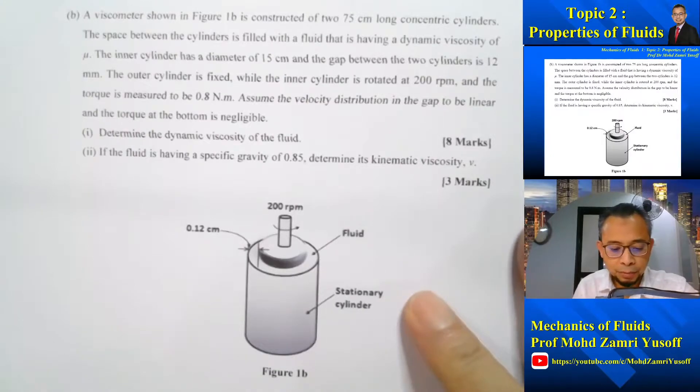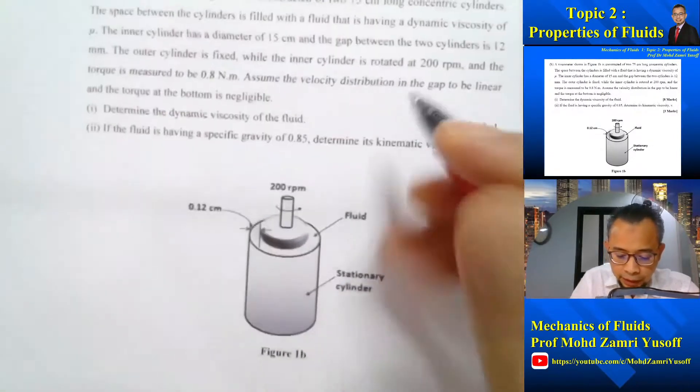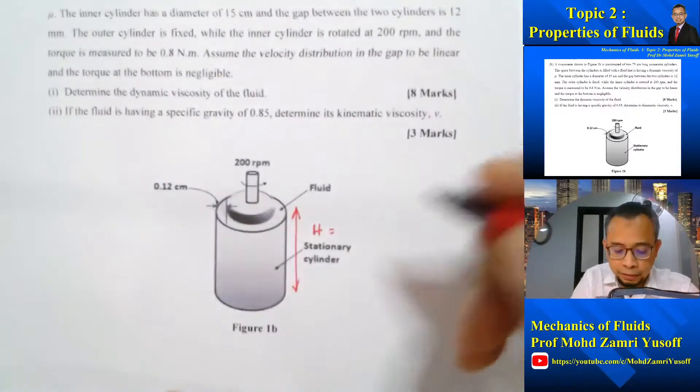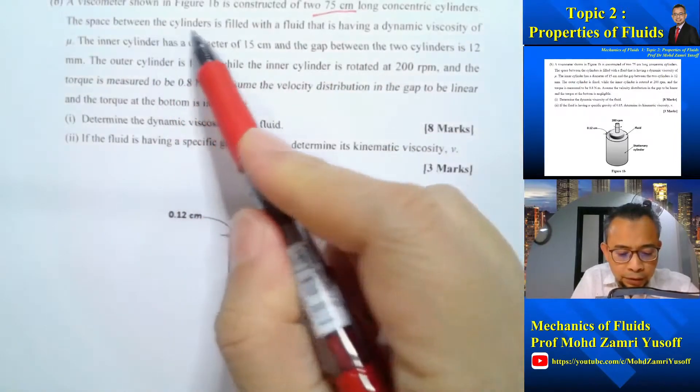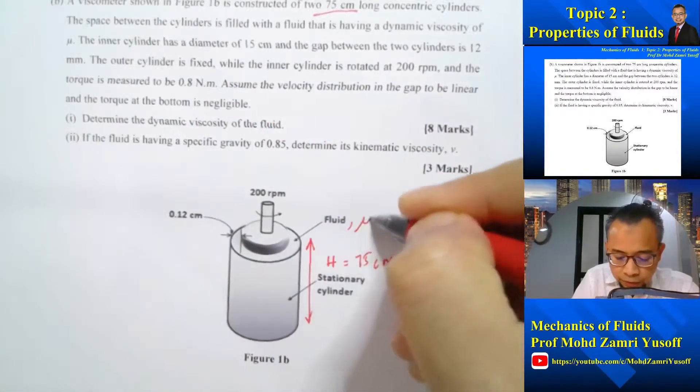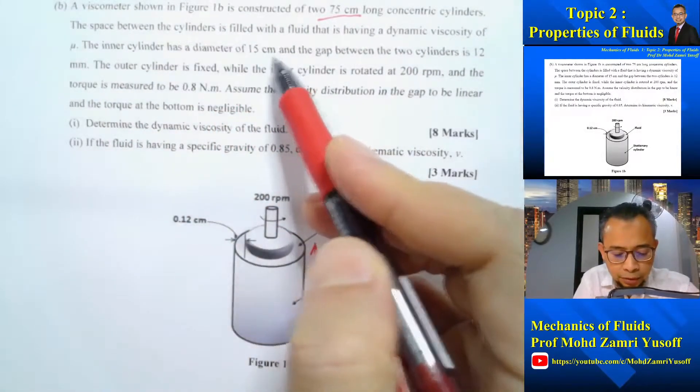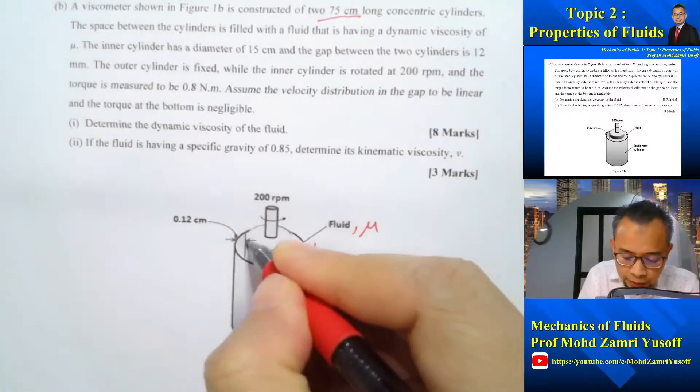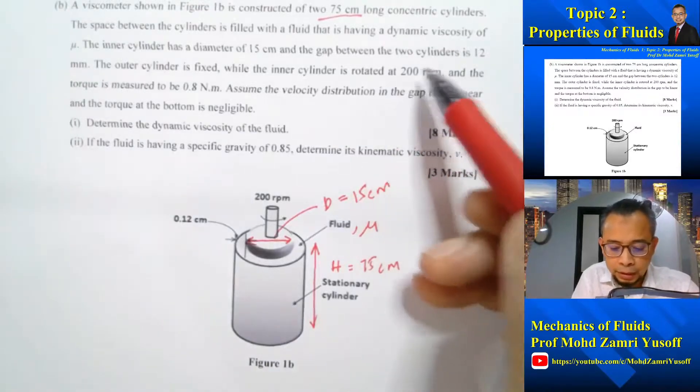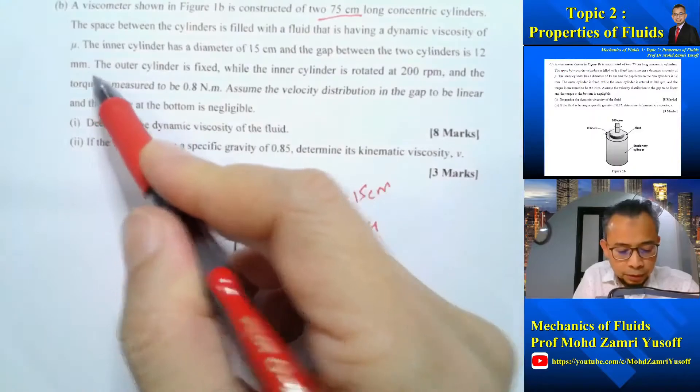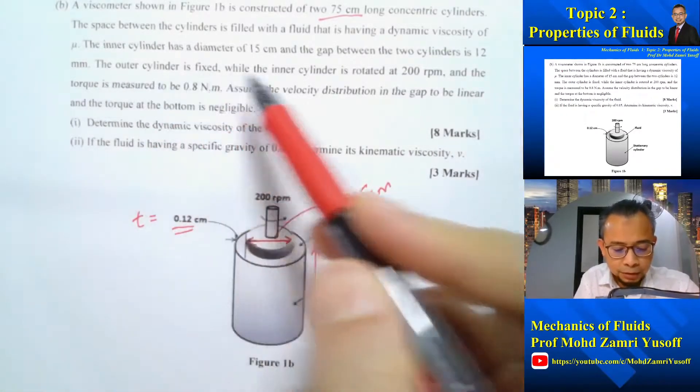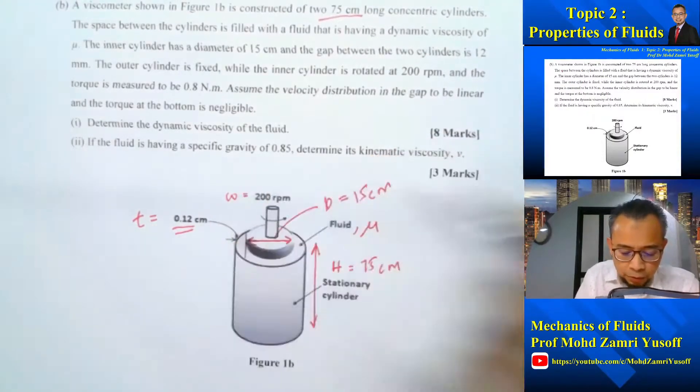So let's first write down all the information given to us. The height of the cylinder, I call it h, is given at 75 cm. The space is filled with a fluid that has dynamic viscosity mu. The inner cylinder has diameter of 15 cm, I call this one d, equal to 15 cm. And the gap between the two cylinders is 12 mm. So the gap, I call this one t, is equal to 12 mm.